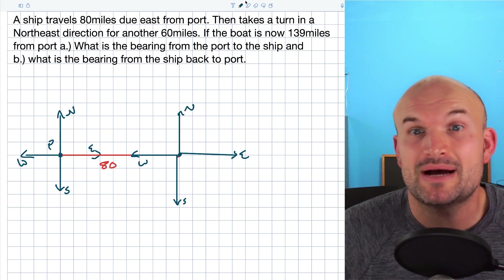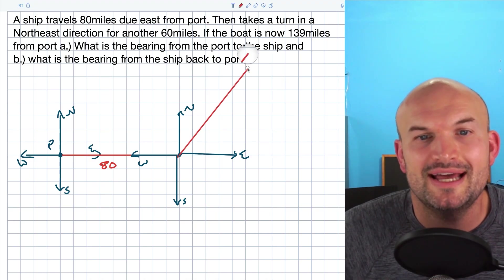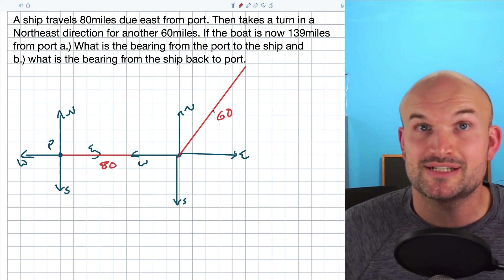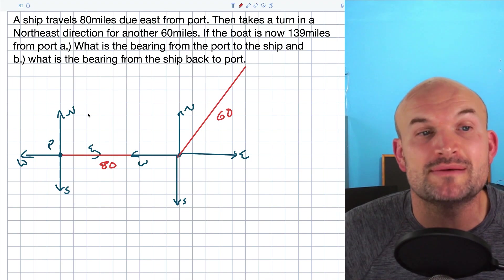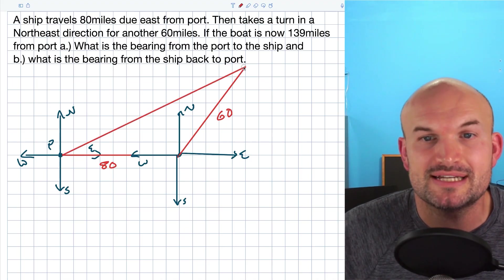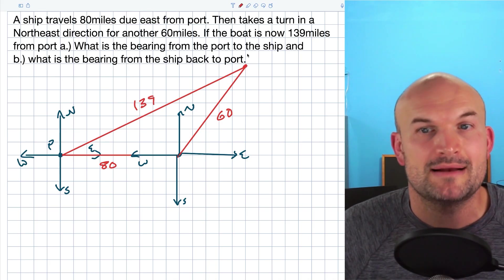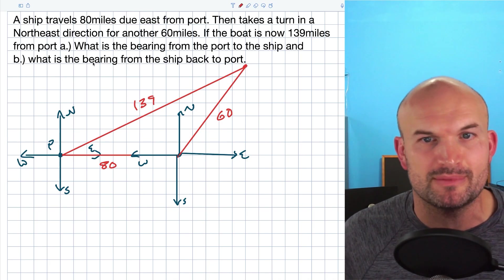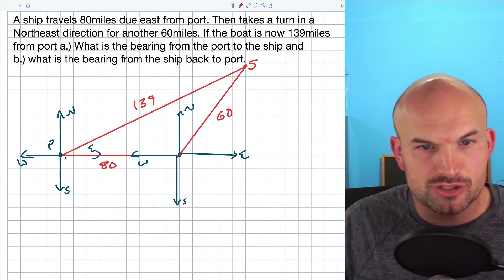We're going in the northeast direction for 60 miles, so I'm going to represent this with another line and label it 60 miles. Then it says the boat is now 139 miles away from port. So I'm going to connect the port to where the boat currently is and label that distance 139 miles. The question is asking: what is the bearing from port to the ship, and what is the bearing from the ship back to port?